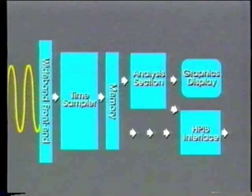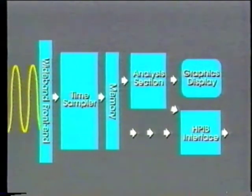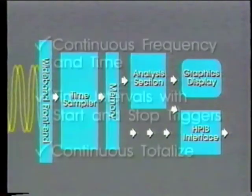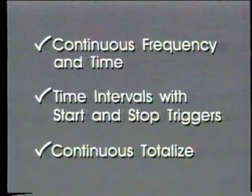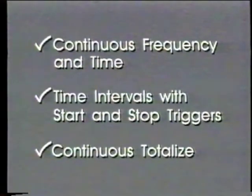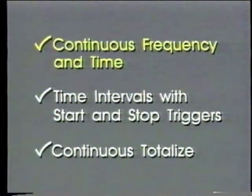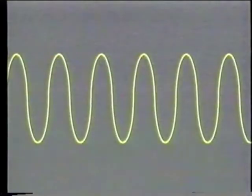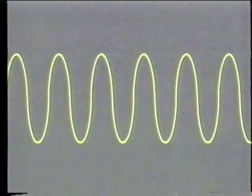Now that we've seen how the 5371A works in general, let's see what happens inside as we make three different types of measurements. To make a continuous frequency measurement, we count single trigger events — in this case zero crossings — and at user-defined intervals, tag them with time.